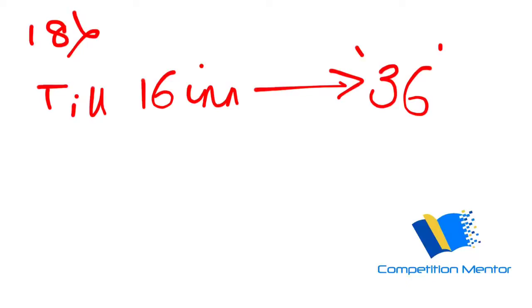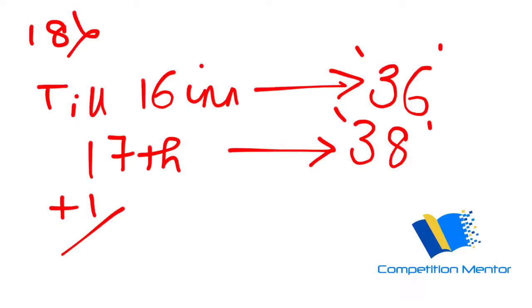On the 17th inning he scored something and then the average is 38. So what is the score in the last inning? What is happening? Plus one - basically one more inning he played, the 17th one, a total of 17, which made the average plus 2. There is an increase of plus 2.